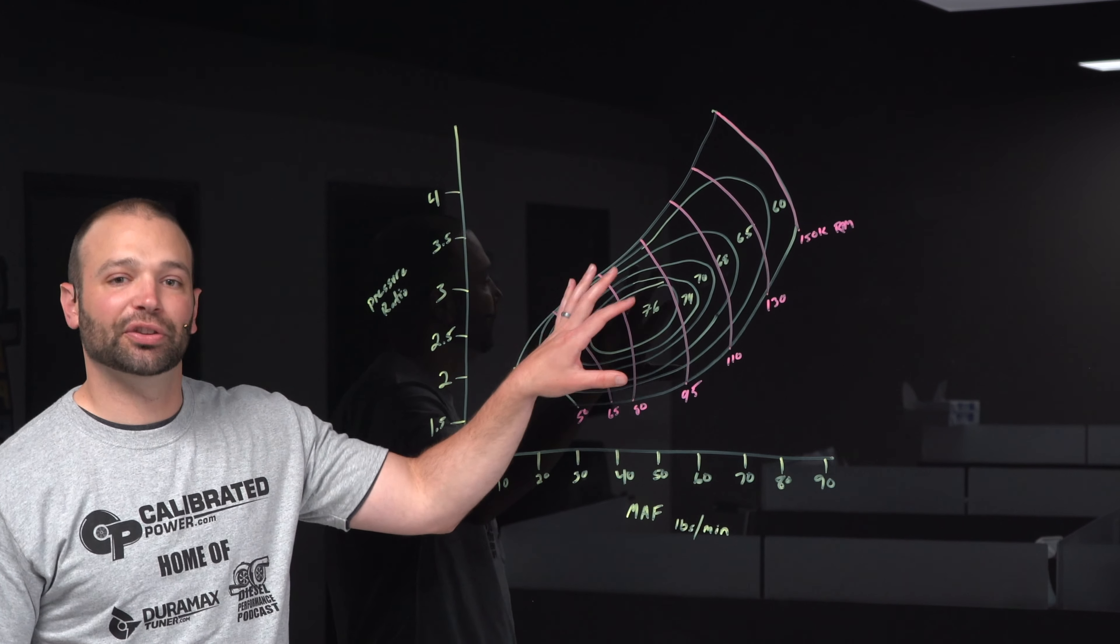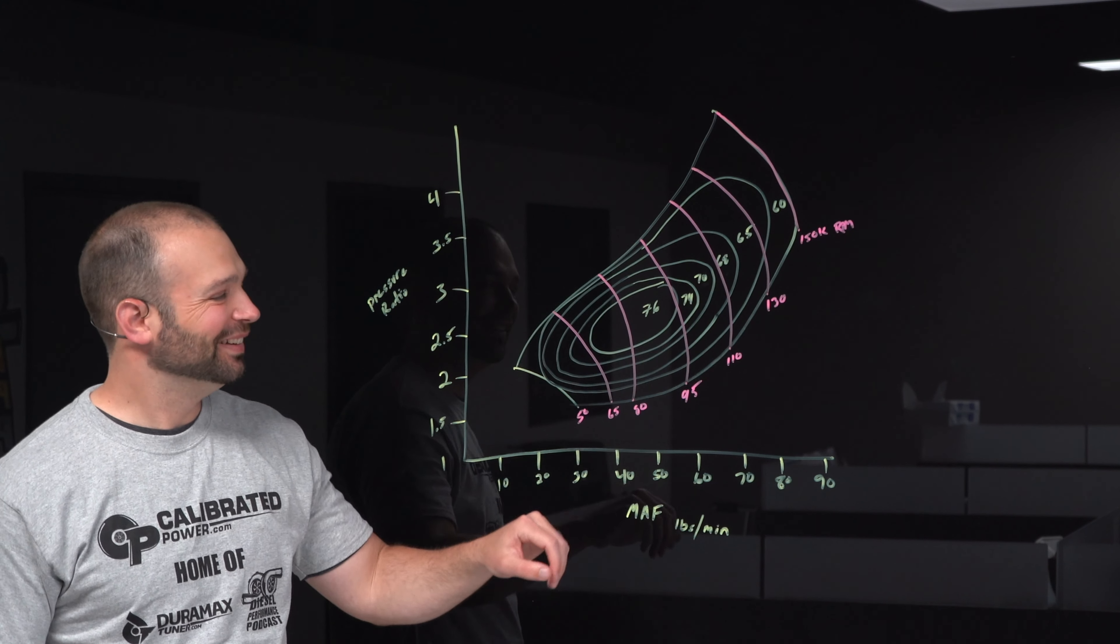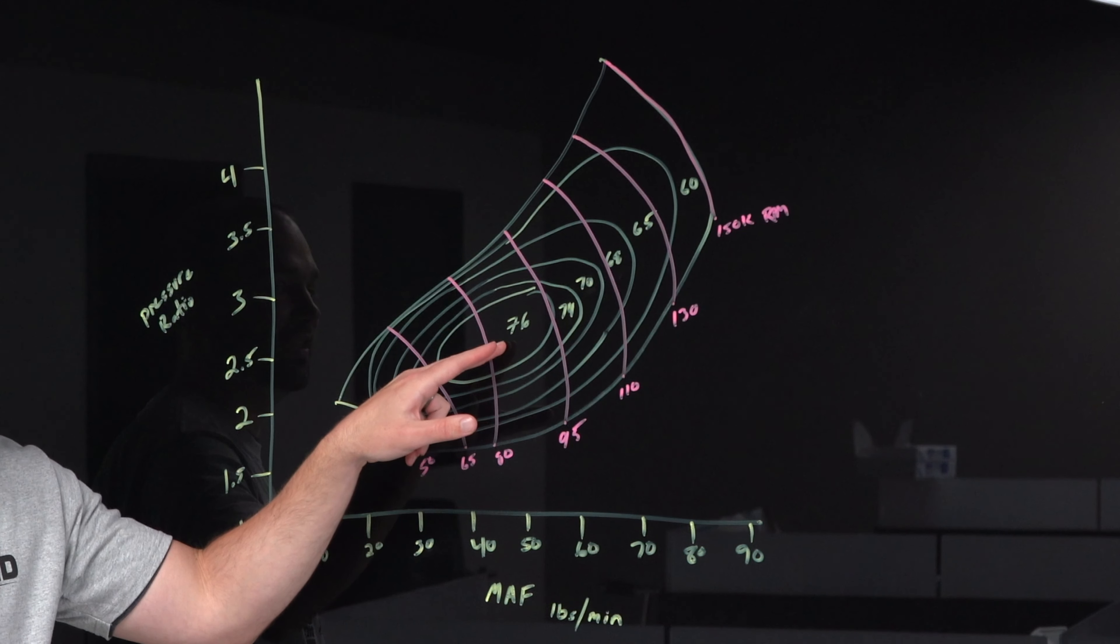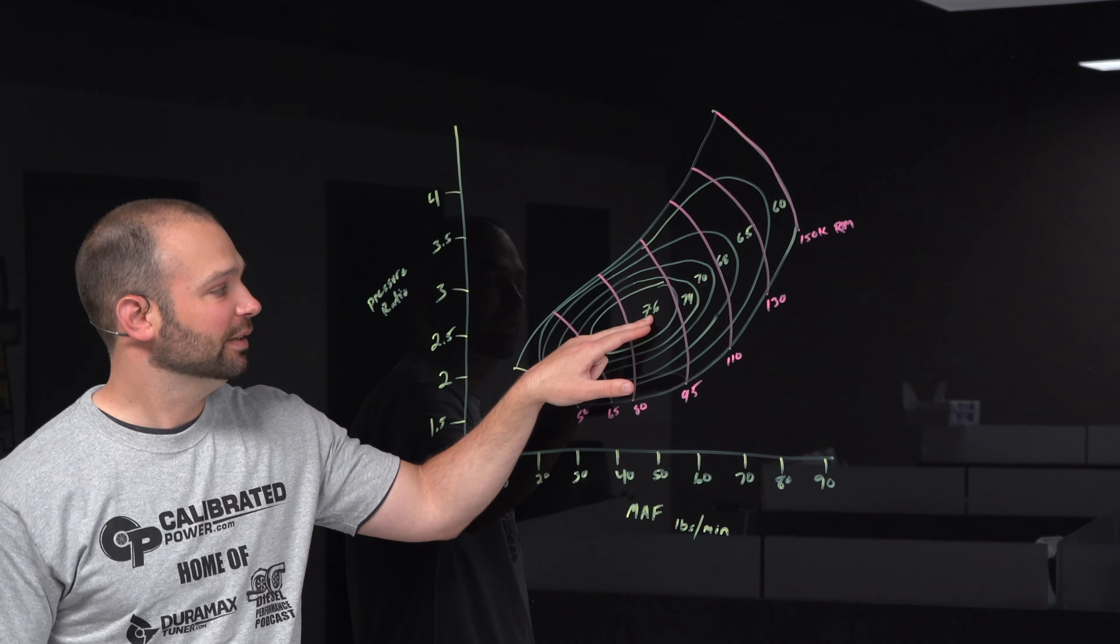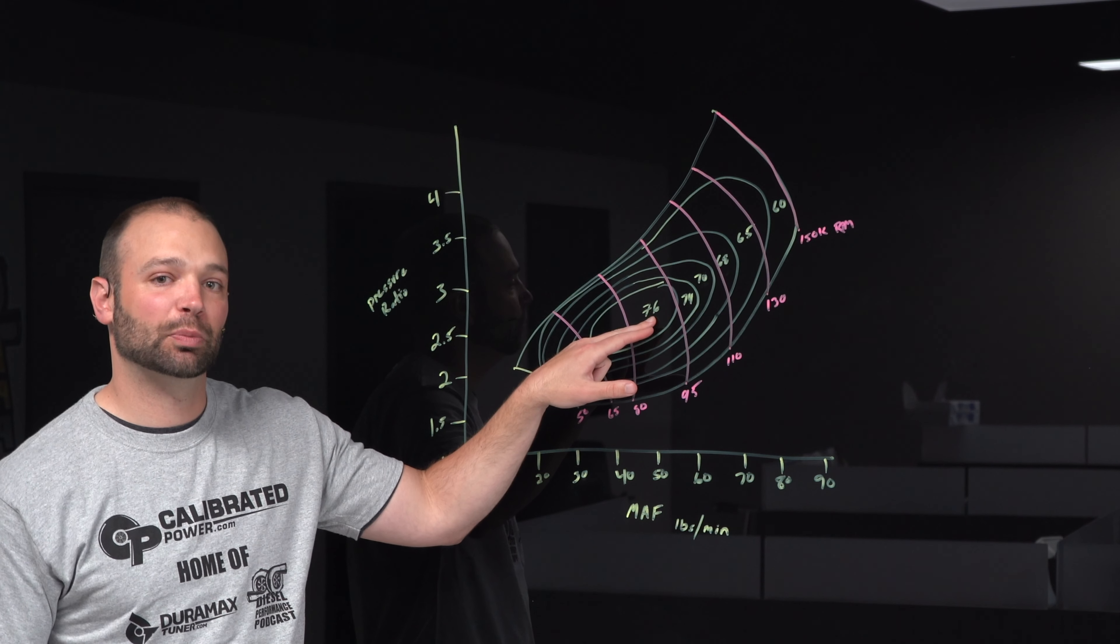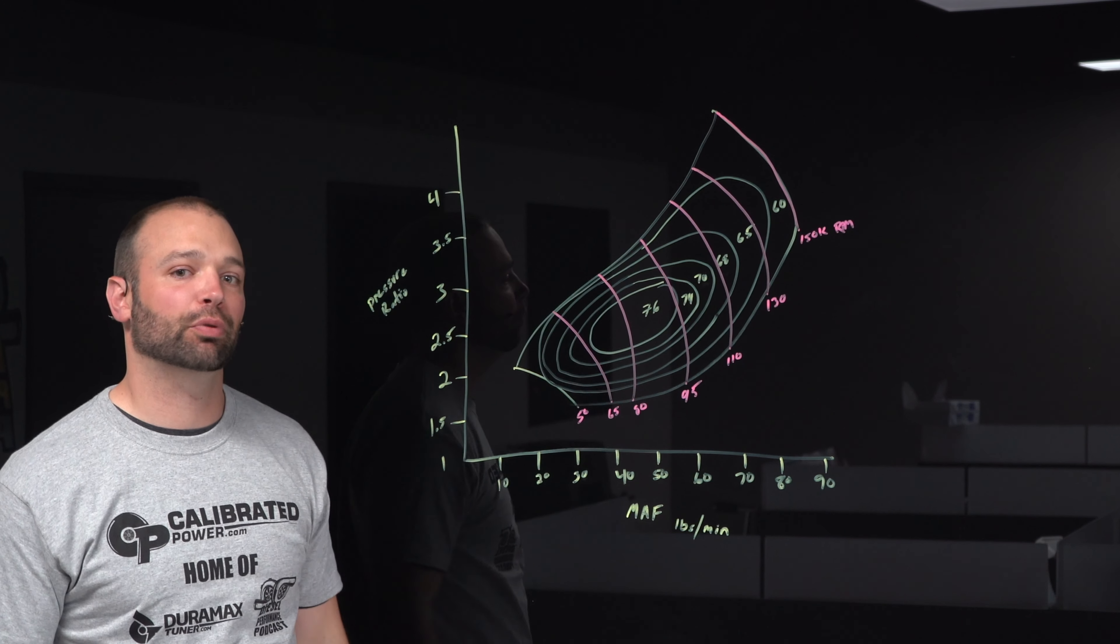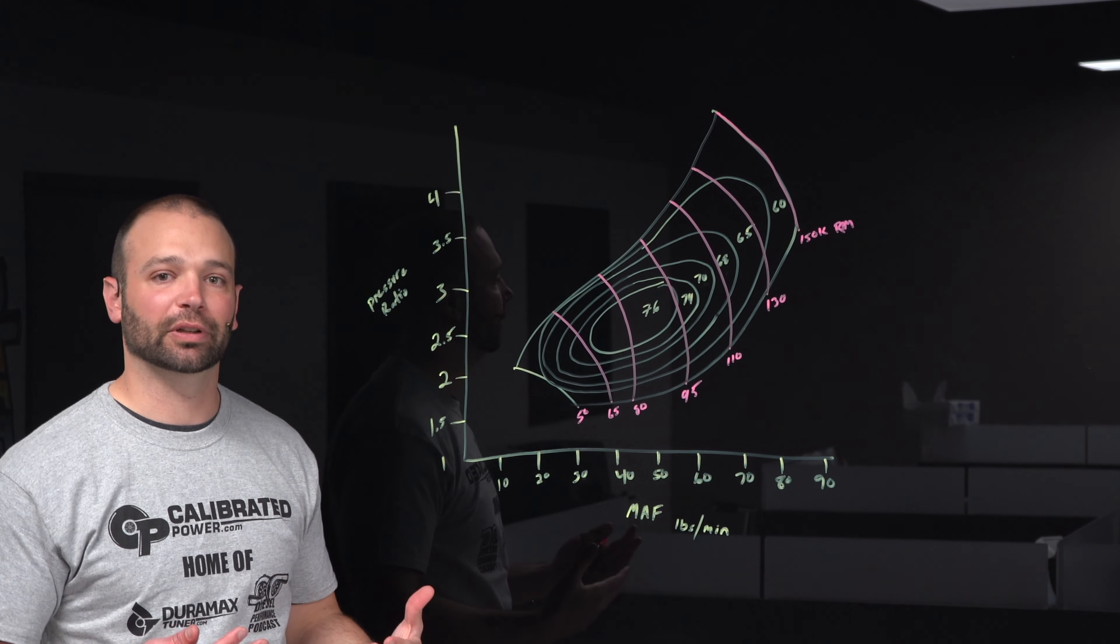All right, now let's look at the graph. A little daunting. I want to draw your attention to the center here, the center island. There's a 76 on that. What does 76 mean? Well, 76 is 76% efficient. Whenever you compress air, you can't do it perfectly.